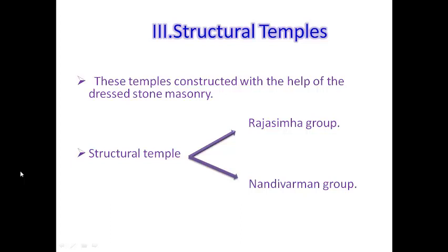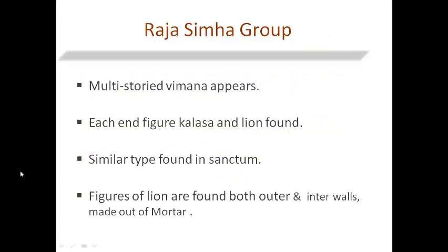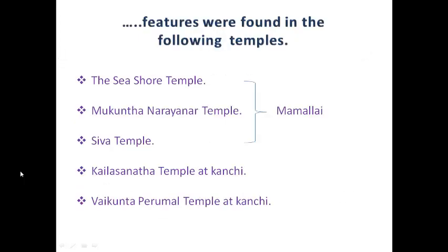The third division of Pallava architecture is the Structural Temples, constructed with the help of dressed stone masonry. This group falls into two divisions: the Rajasimha group and the Nandivarman group. In the Rajasimha group, a multi-storied Vimana appears in descending order like a chariot. On each end, figures of Kalasha and Lion are found. Niches contain a linga similar to that found in the sanctum. Figures of lions are found on both the outer and inner walls. The following temples belong to this group: the Seashore Temple, Mukunda Narayana Temple, and Shiva Temple — all at Mamallapuram.